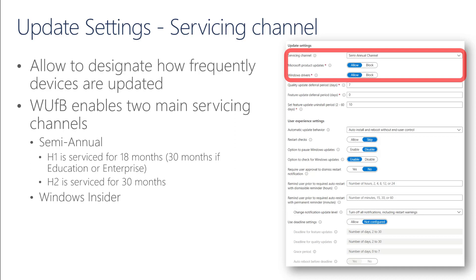The semi-annual channel versions released in the first half, or H1, have an 18-month life cycle. If you are using Enterprise or Education Edition of Windows, devices will be serviced for 30 months. The H2 release is serviced for 30 months regardless of whether you're using Pro, Pro Education, Education, or Enterprise. The semi-annual channel allows us to service our operating systems twice per year. With the Windows Insider channel, we can deploy pre-production Windows builds to test machines to gain early visibility into the next Windows build. Devices will receive updates more frequently than the semi-annual channel.